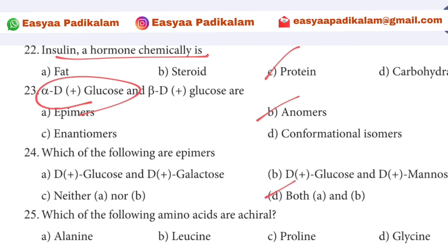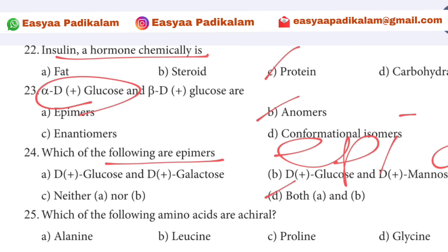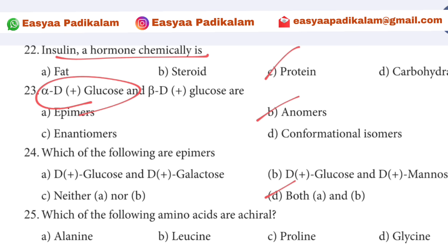24th question: Epimers — epimers differ at a single chiral carbon. If we have the correct answer, we can choose both A and B.